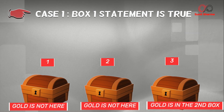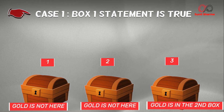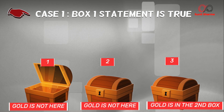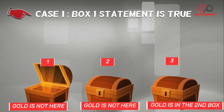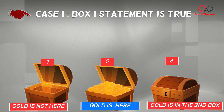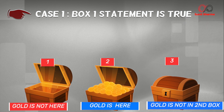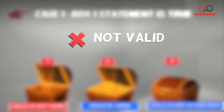Case 1: Let's assume the first statement is true and the other two statements are false. Since statement on box 1 is true — which says gold is not here — that means gold is not in box 1. That means box 2 and box 3 statements have to be false. The statement on box 2 says gold is not here, which is supposed to be false, so the exact opposite is true — gold has to be in box 2. However, since statement on box 3 is false — which says gold is in box 2 — the exact opposite must be true, meaning gold is not in box 2. This contradicts our conclusion that gold is in box 2. Hence this case is not valid.